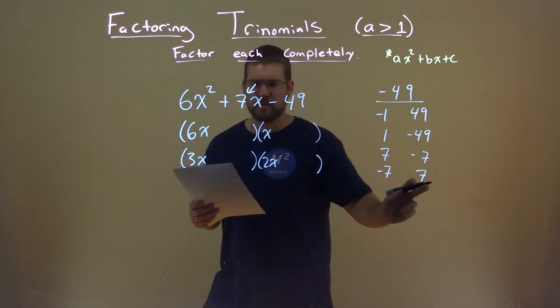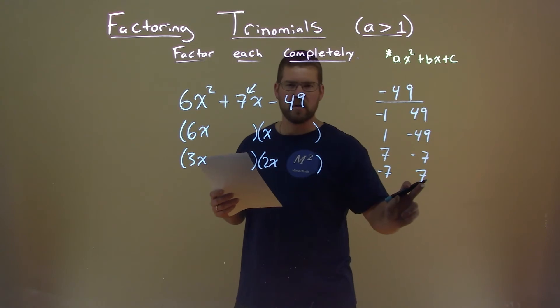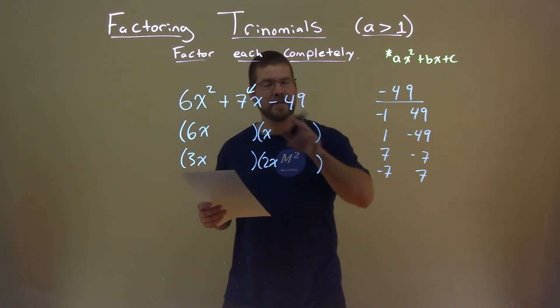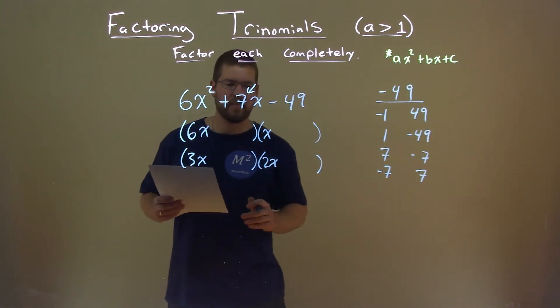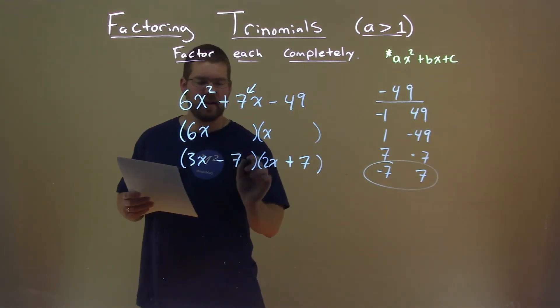So if 3 times a positive 7 is 21, and 2 times a negative 7 is minus 14, 21 minus 14 gets us that 7 right there. And so I would look for a positive 7 here and a minus 7 here.